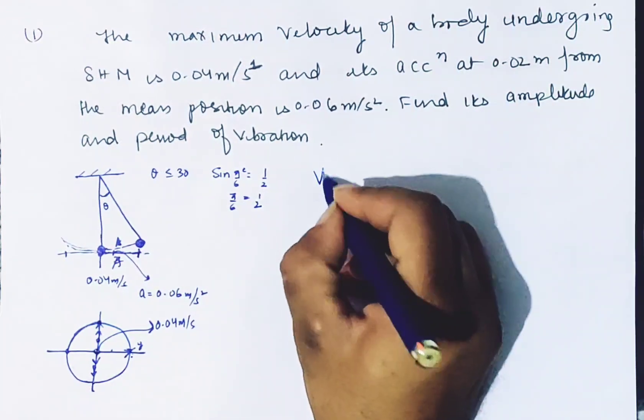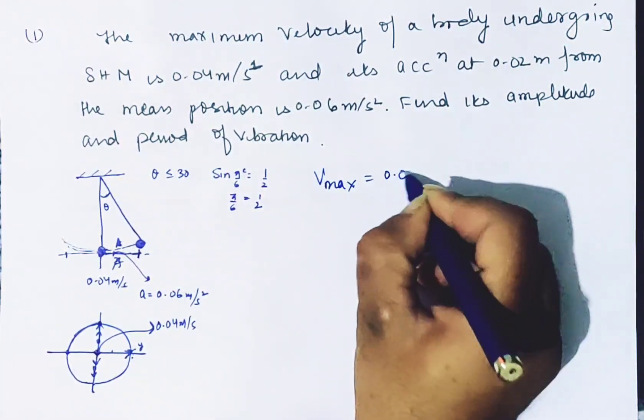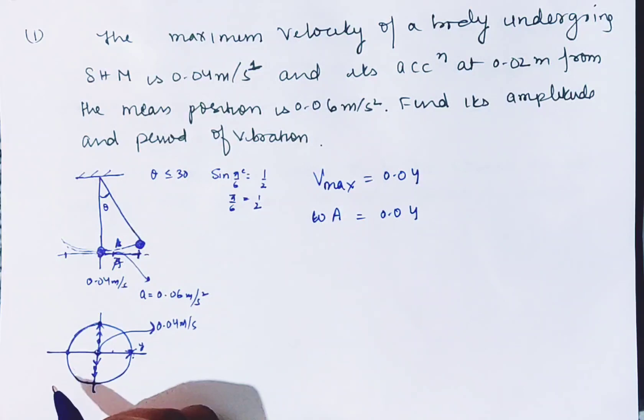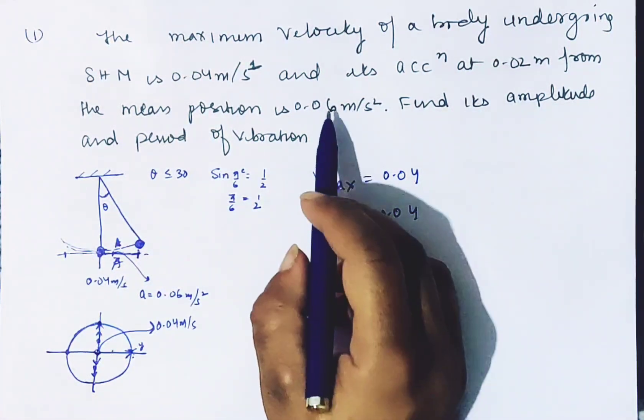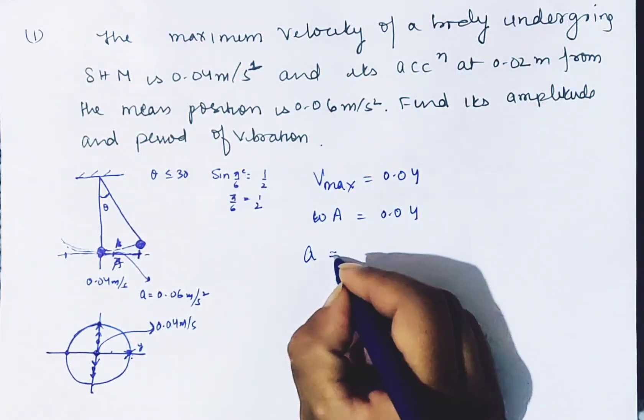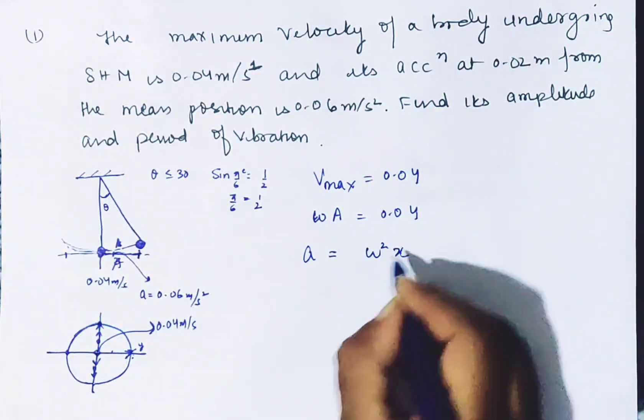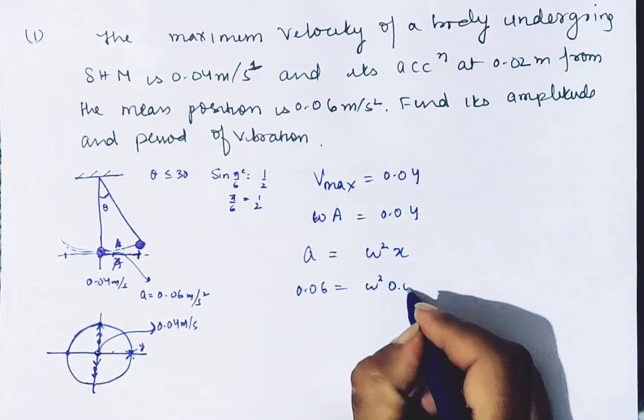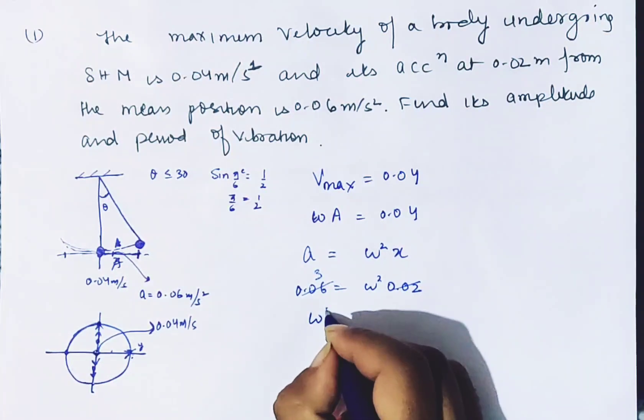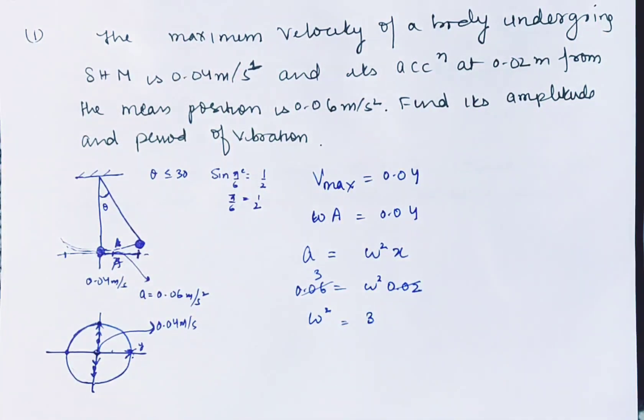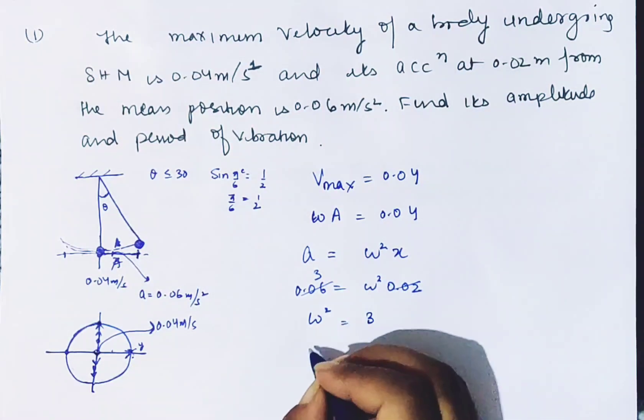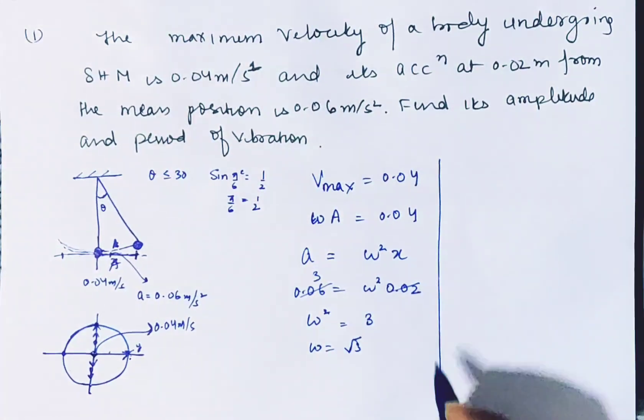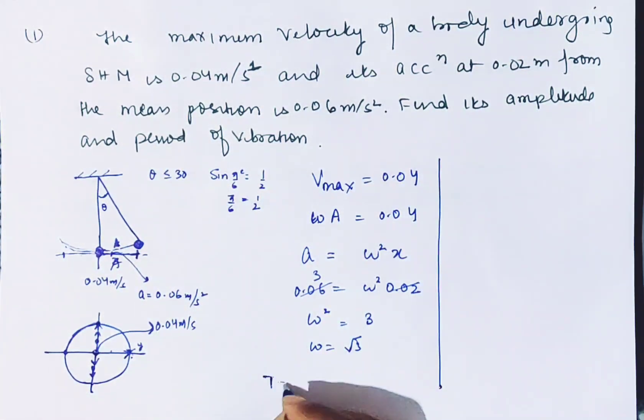We have been given V_max is equal to 0.04, and V_max is omega times A equals 0.04. And acceleration is given at 0.02, so A is omega squared times x, so 0.06 equals omega squared times 0.02. So this goes three times, so omega squared equals 3. And we can use this, so omega is root 3.